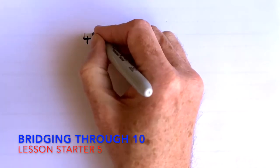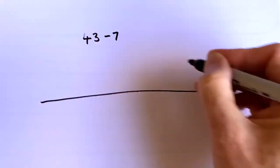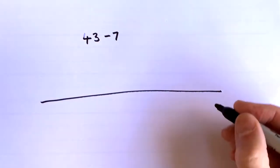So if I've got a calculation like 43 minus 7, now I'm moving back on my number line so I'm subtracting.